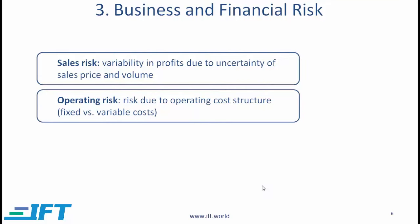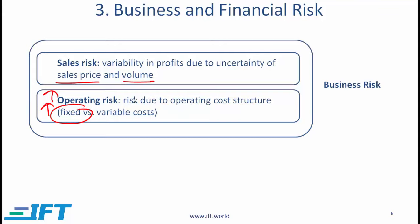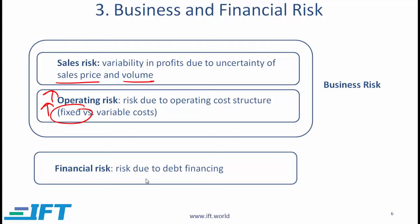Coming now to business risk and financial risk. Within business risk, we have sales risk and operating risk. Sales risk deals with the variability in profits due to uncertainty of sales price and volume. Operating risk is the risk due to the operating cost structure — if a company has high fixed costs, the operating risk is high. Sales risk and operating risk collectively are referred to as business risk. Financial risk is the risk due to debt financing; if a company has a lot of debt, it must make large interest payments and the financial risk is high.